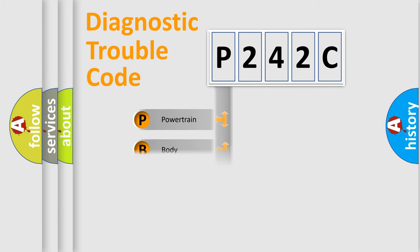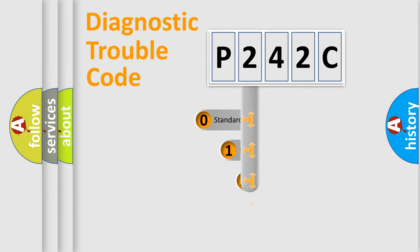Powertrain, body, chassis, network. This distribution is defined in the first character code.